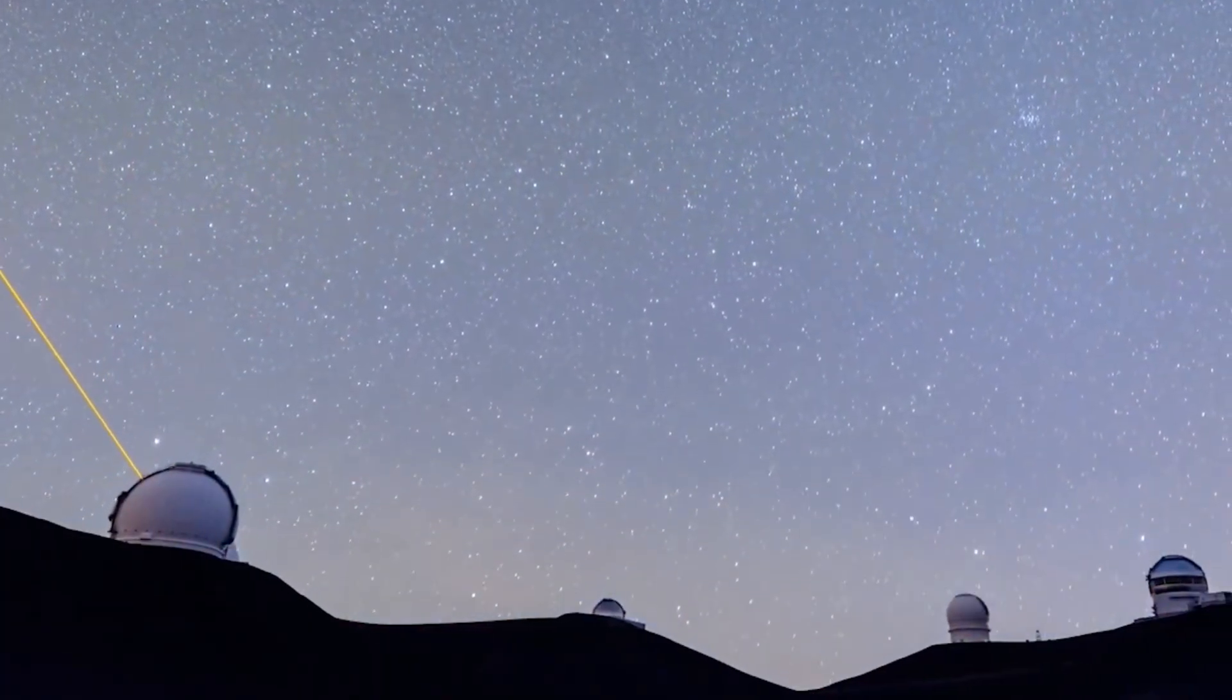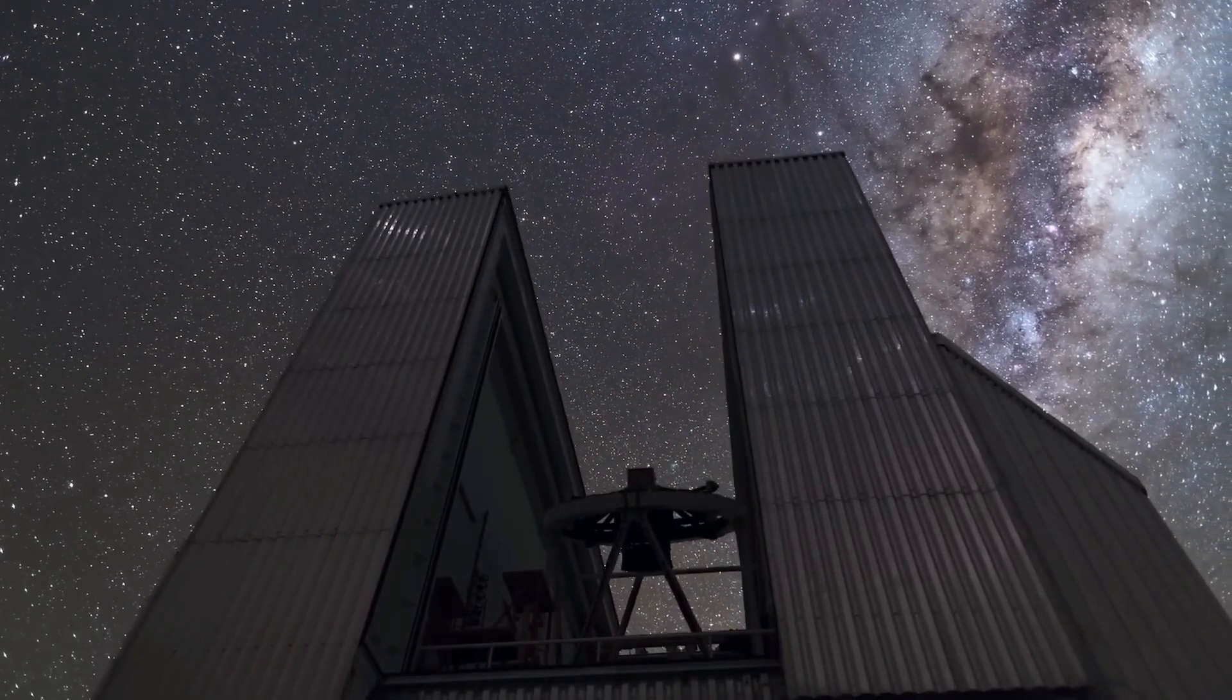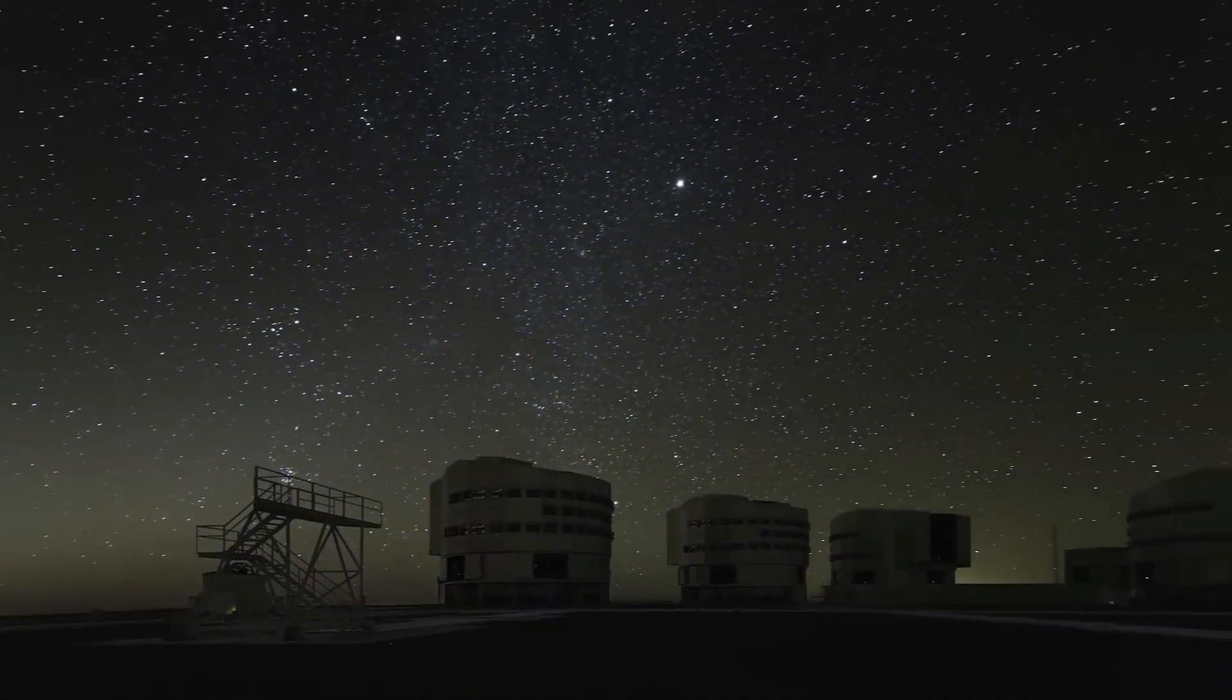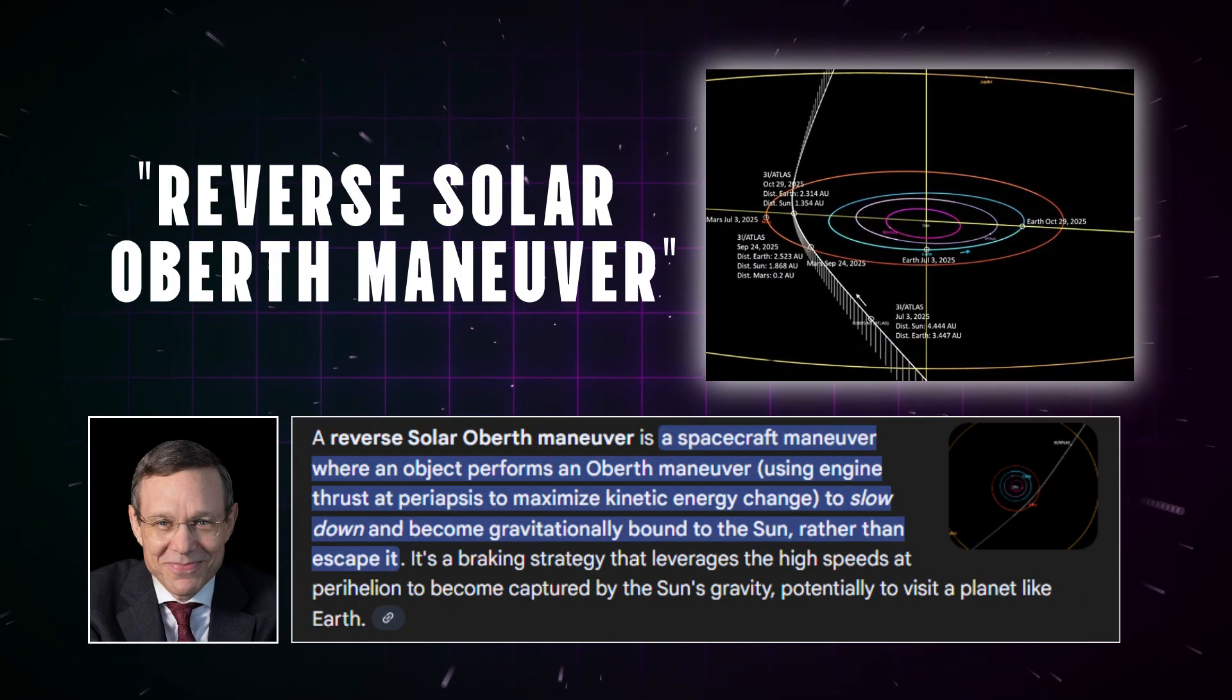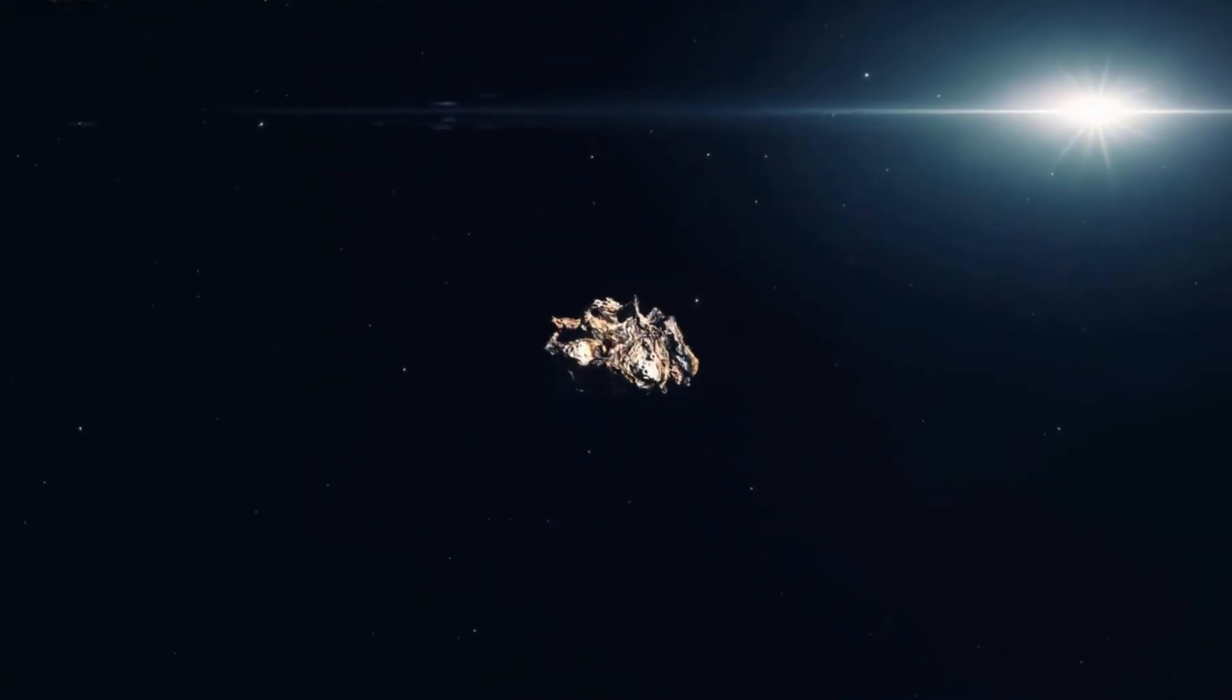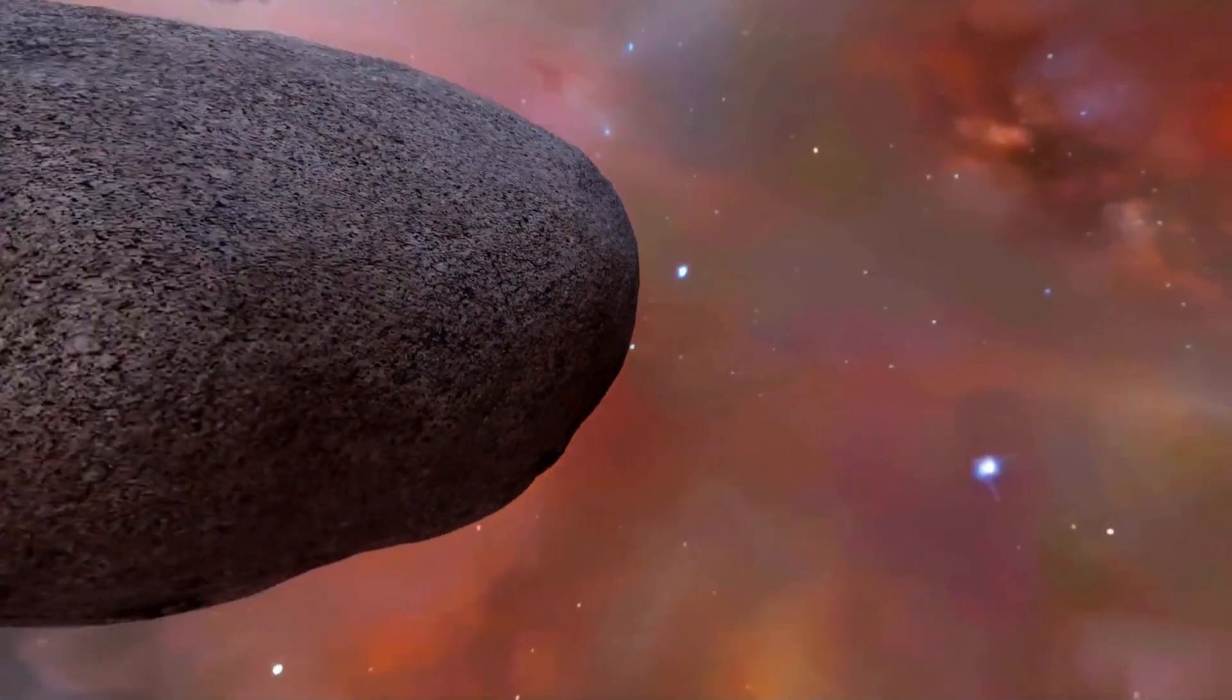Another detail raises serious questions. 3i Atlas reached its closest approach to the Sun when Earth was positioned on the opposite side of our star. Ground-based telescopes literally couldn't observe it during this critical phase because of solar glare. If someone were designing a spacecraft to conduct operations while avoiding detection from Earth-based telescopes, this timing would be absolutely perfect. Loeb calls this a potential reverse solar Oberth maneuver, a high-thrust braking strategy that could allow an interstellar craft to slow down and potentially remain bound to our solar system. The fact that this maneuver was completely hidden from Earth's view is either an incredible coincidence or evidence of deliberate planning.